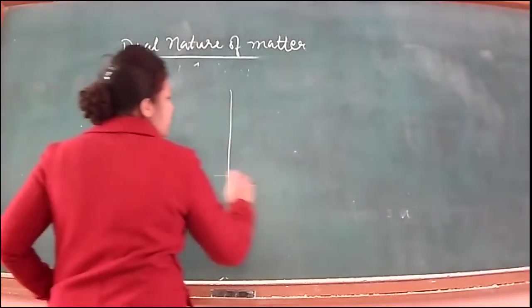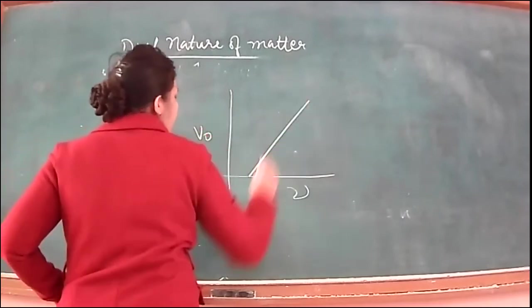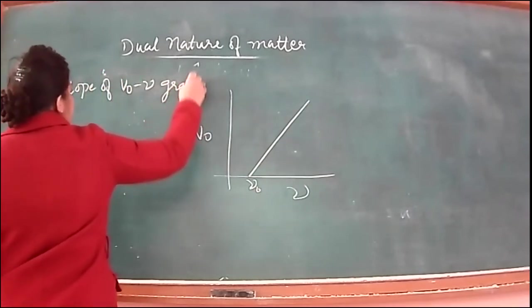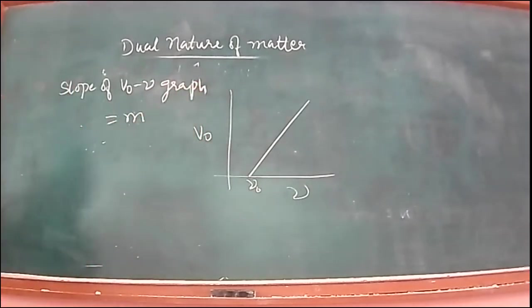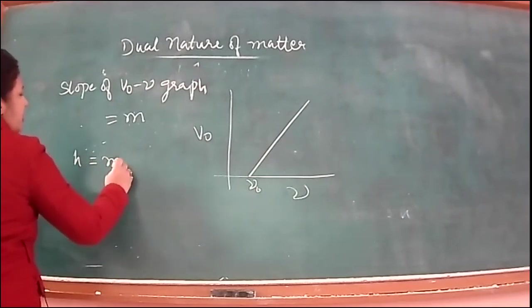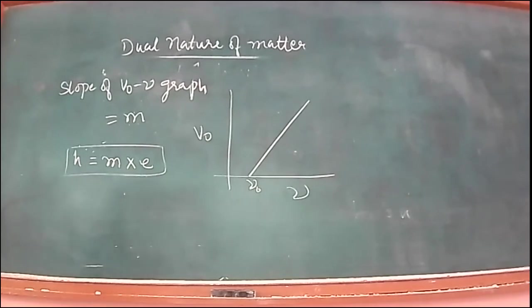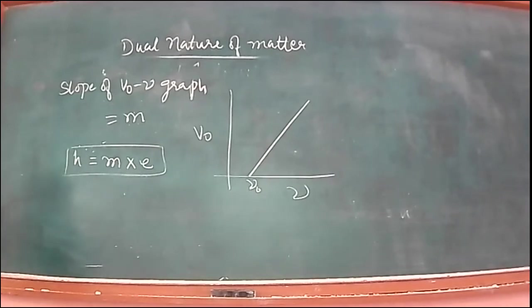If we have the frequency-stopping potential graph, the slope of this graph can be used to find Planck's constant. Planck's constant equals the slope of the graph multiplied by the electronic charge: h = slope × e.